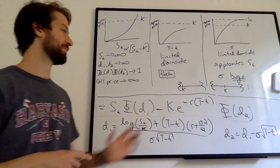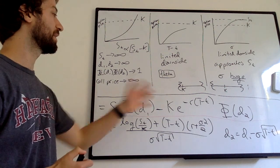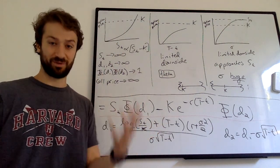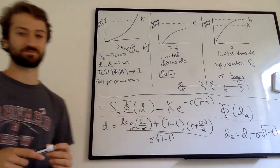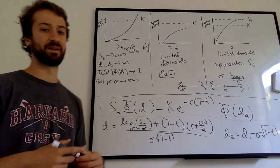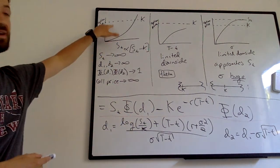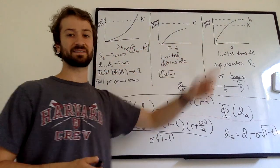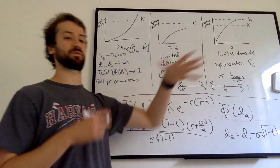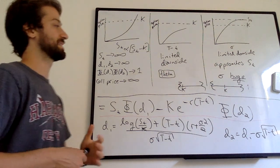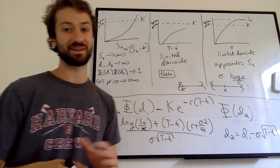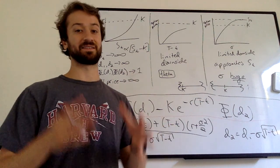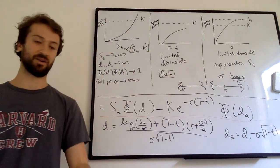When the vol is massive, you're probably going to exercise — the stock is almost certainly going to end in the money, because the range of outcomes is so huge that the probability of ending up below K is small. For example, if K is $10 and the stock could end up anywhere from zero to a billion, you're probably in the money. Once you basically know you're going to exercise, the value of your option approaches the stock price, since that's what you're going to get for K at time T. That's why the chart flattens at the current stock price rather than continuing to rise.